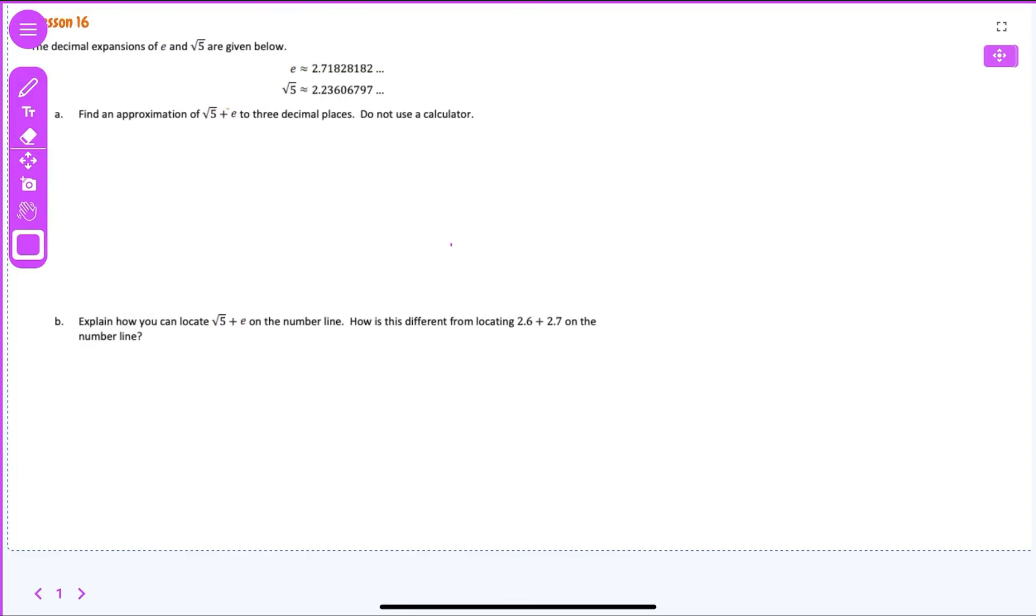That is Algebra 2, Module 3, Lesson 16. This is the decimal expansions of e, or Euler's, and the square root of 5 are given below. Find an approximation of square root of 5 plus Euler's to three decimal places. Do not use a calculator.